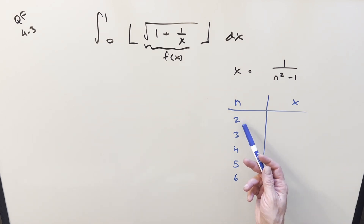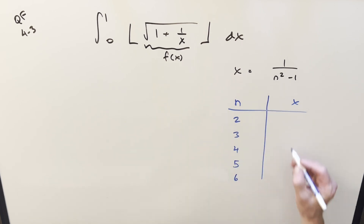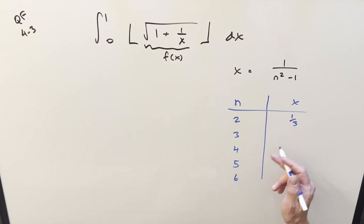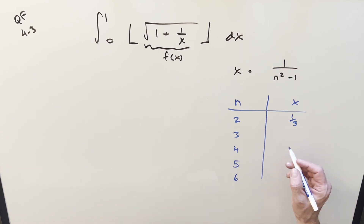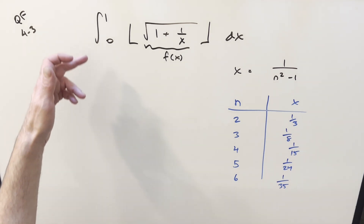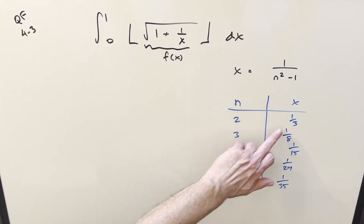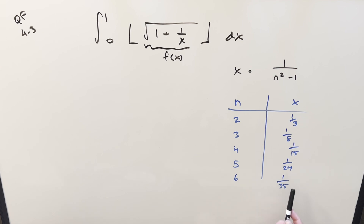We have our table. Starting at n equals 2 — if you start at 1 you're dividing by 0. Plug in n equals 2 and you get x equals 1 third; n equals 3 gives 1 over 8; n equals 4 gives 1 over 15; then 1 over 24, and 1 over 35. From here, we break up the integral from 0 to 1 on these x values, so that within each sub-interval the floor function becomes just a constant, and the whole thing simplifies to a series.